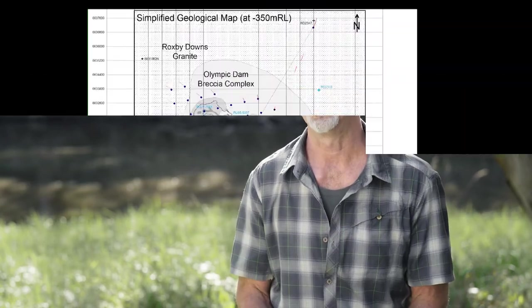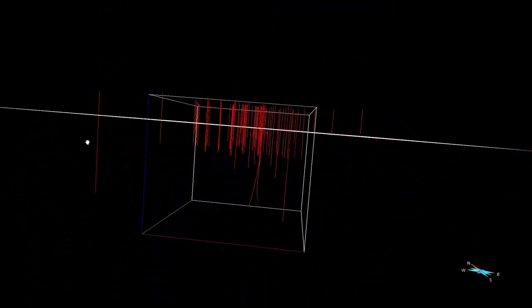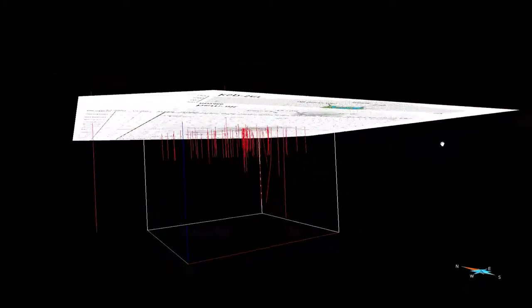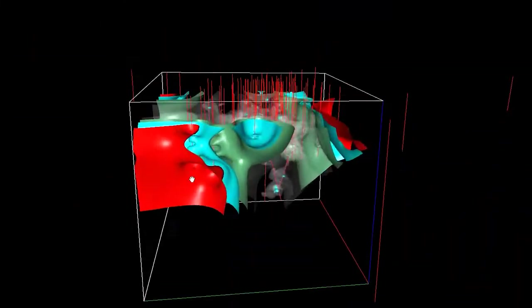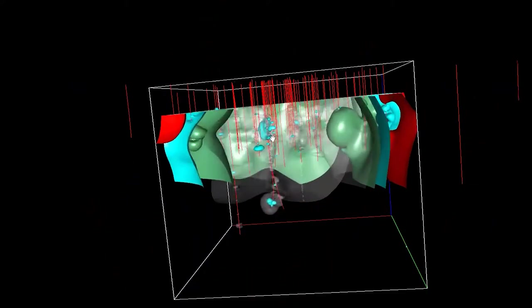The National Virtual Core Library and the HyLogger data that sits behind it is incredibly important to the minerals industry. It allows us to understand how mineral systems work, and we do that by building three-dimensional models with the HyLogger data that describe the shape of mineral systems and of ore bodies, and how best to mine them.